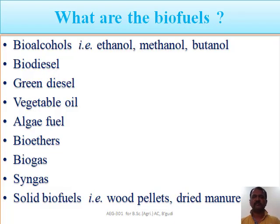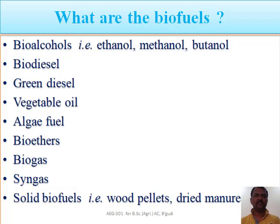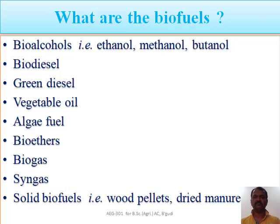Biofuels extracted from different types of plants, industries, or seeds can come in various forms. We are getting them in the form of bioalcohols, particularly ethanol, methanol, and butanol, after a conversion or processing step. We are getting it in the form of biodiesel, then green diesel, and some vegetable oils which we process and use as biofuel. Then algae fuel, bioethers, biogas, syngas, and solid biofuels, particularly from plant residue and forest residue — that is wood pellets and dried manure.